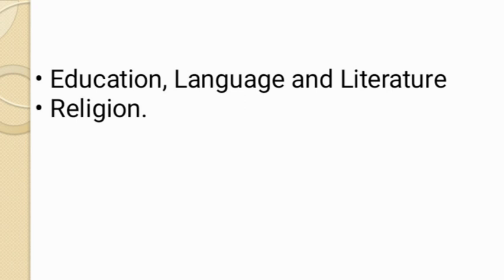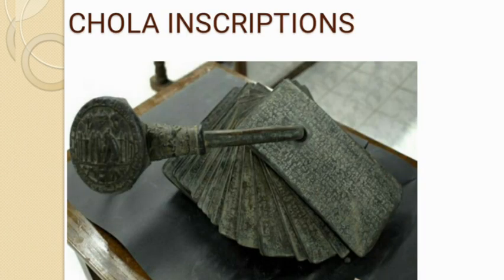In the 12th century, a religious teacher developed the Lingayat sect, and the Lingayats worshipped the Shivalinga. Now, about Chola inscriptions: the achievements of Chola rulers are recorded on stone and copper plates. These inscriptions are found at Thanjavur, Thiruvallangadu, and Tiruchi. They provide information about the Cholas and are written in Tamil and Sanskrit. They describe how the sabha (assembly) was organized and how it functioned.